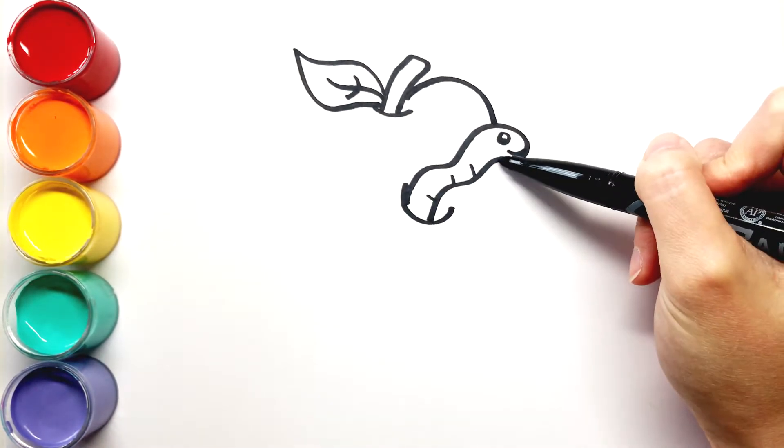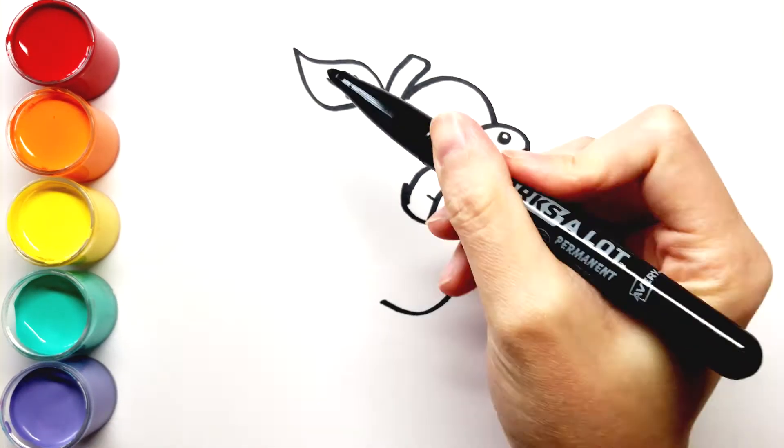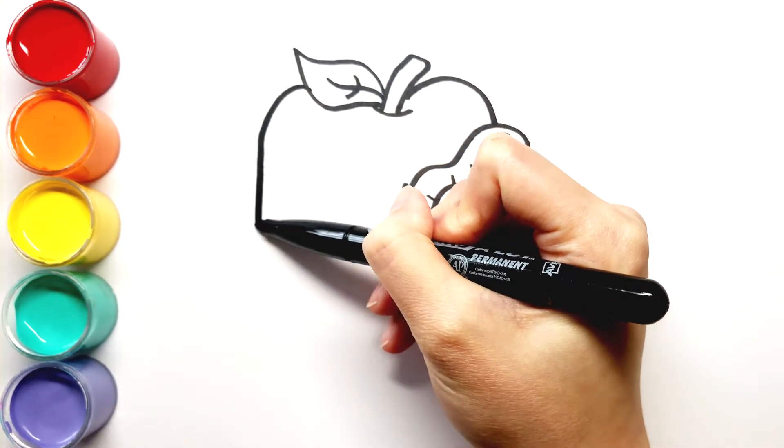Draw the outline of an apple. Remember to break the line to make it look like the worm is on top of the apple.